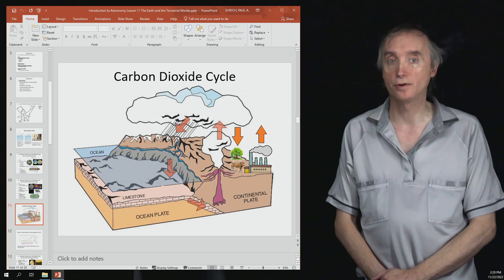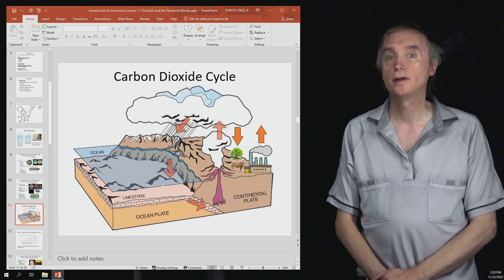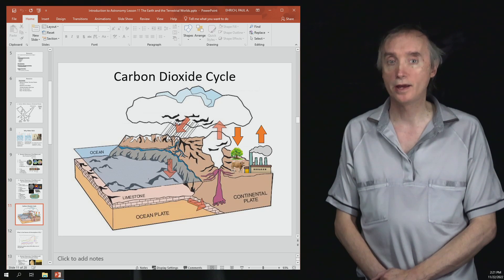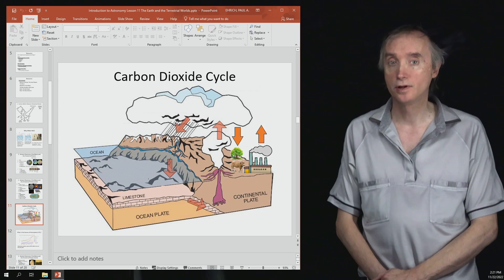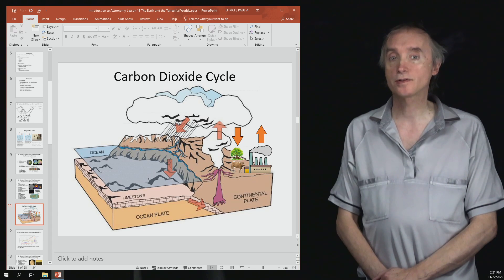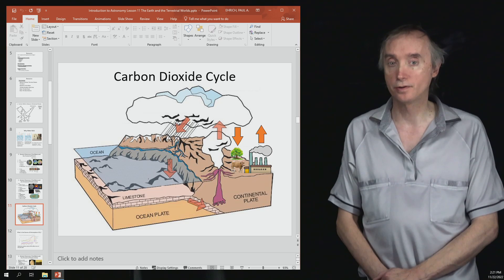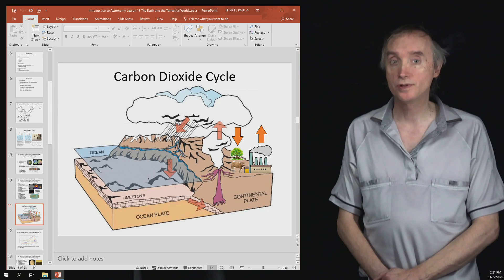On Earth, that carbon dioxide is washed out by rain and ultimately ends up in the oceans. That carbon dioxide mixes with the ocean water to make calcium carbonate, which precipitates.